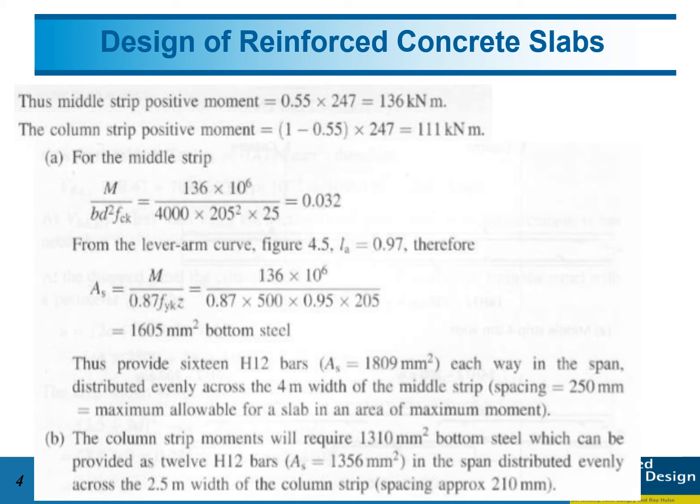Because this is at the middle strip, meaning for the positive moment, we need to provide the main bar at the bottom side of the slab: 1605 mm². Then, by using this value, we can get the number of rebars: 1605 divided by the area of 1 diameter 12 mm bar.